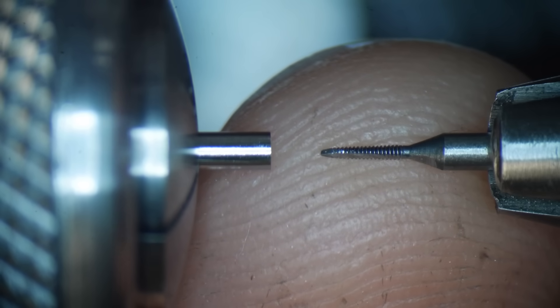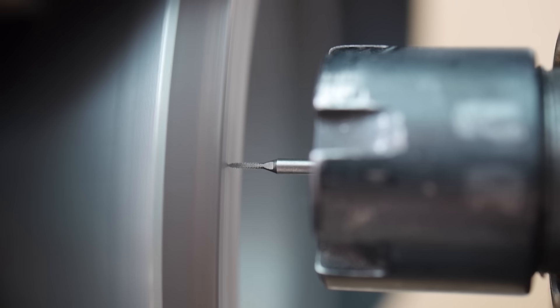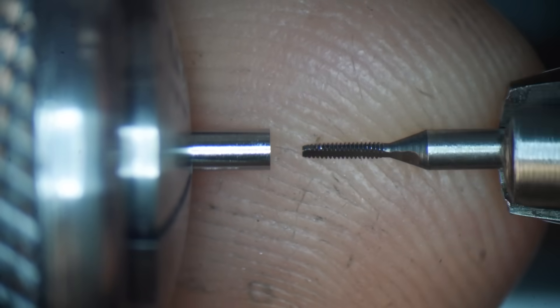To allow me to tap closer to the bottom of the hole, I ground the tip off the 0.6mm tap, and this is something that you can do with larger taps too.